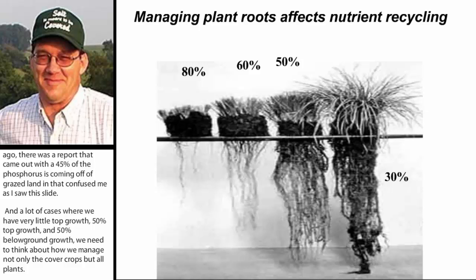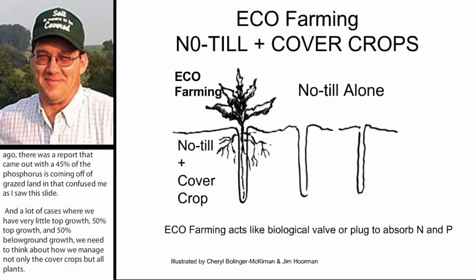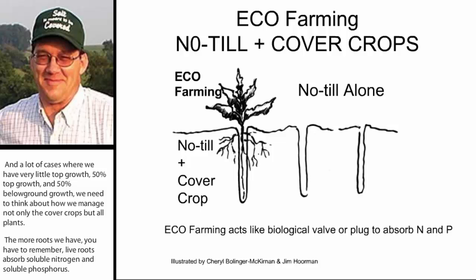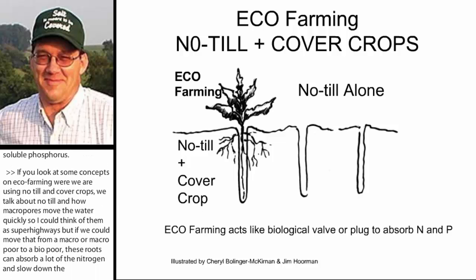Looking at some concepts in eco farming where we're using no-till and cover crops — we hear a lot about how macro pores move water through the soil very quickly. I like to think of them as super highways. But if we can move that water from a macro pore to a micro pore to a bio pore, we can use the roots where we have cover crops. They can absorb a lot of this nitrogen and slow down the water so that we have time for mineralization. The soil acts as a very good filter of these nutrients. Between the mineralogy and live plants, we can absorb a lot of soluble nutrients, especially nitrogen and phosphorus.